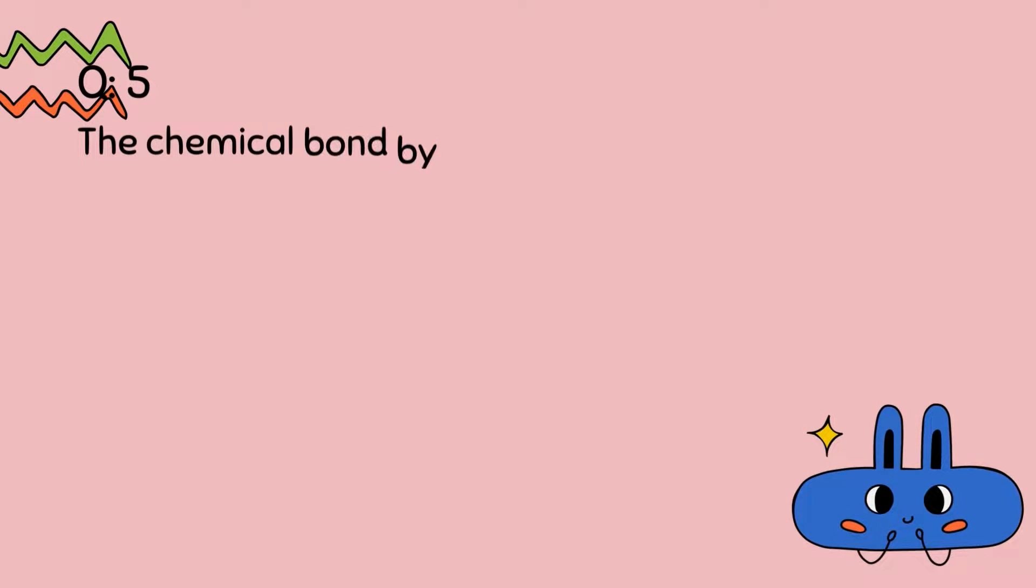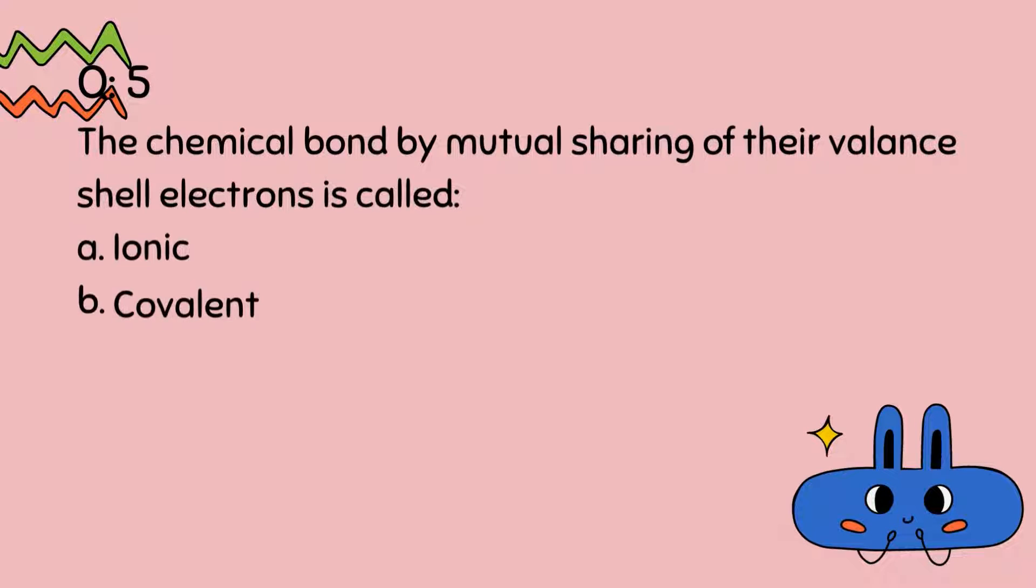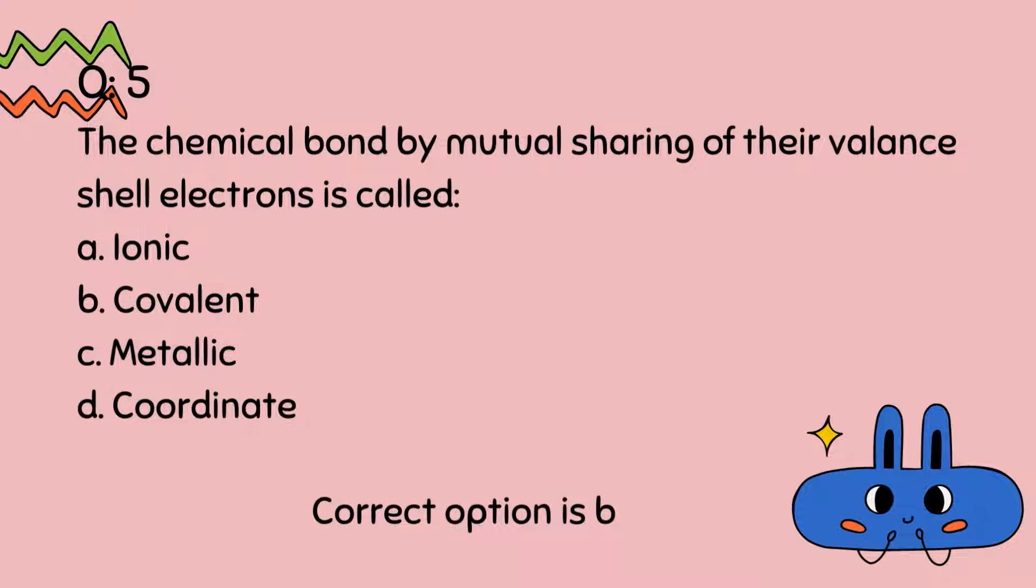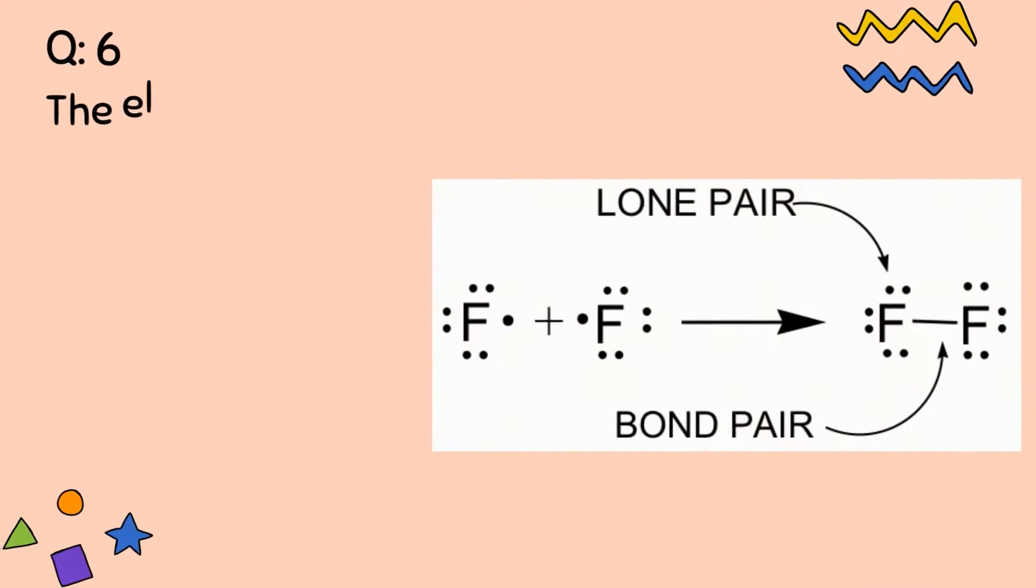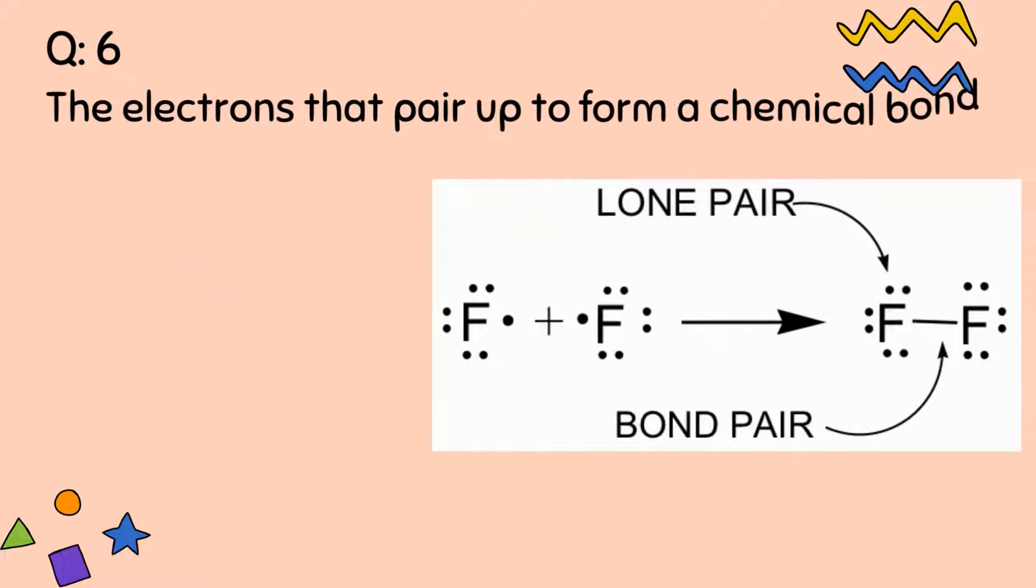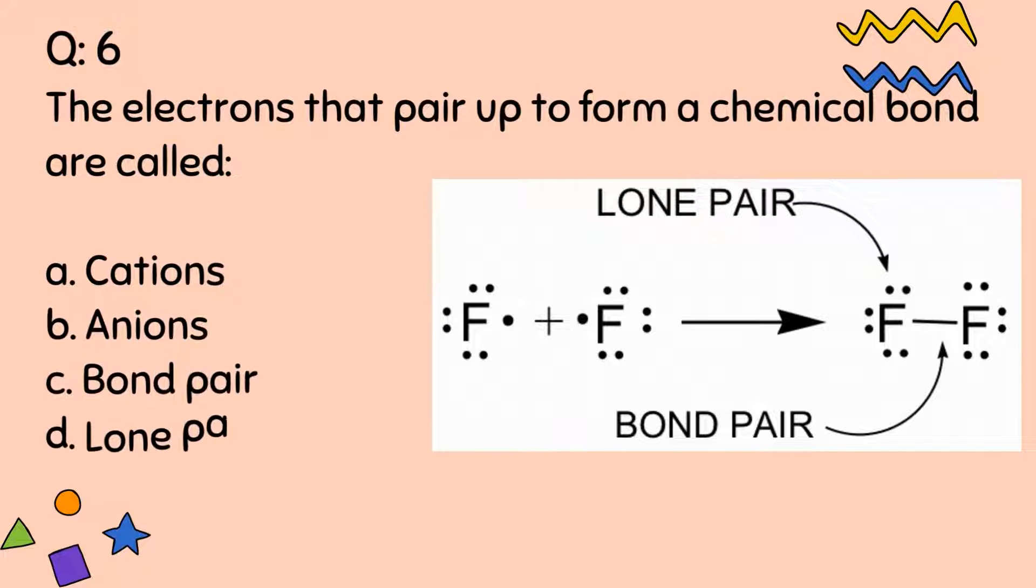Question number 5. The chemical bond by mutual sharing of their valence shell electrons is called: A, Ionic, B, Covalent, C, Metallic, D, Coordinate. Correct option is B. Question number 6. The electrons that pair up to form a chemical bond are called: A, Cations, B, Anions, C, Bond pair, D, Lone pair. Correct option is C.